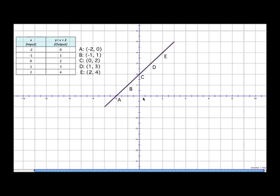We draw a line through the points, draw arrows at both ends, and the last thing we do is write the function, in this case, y = x + 2.